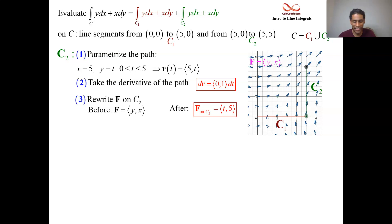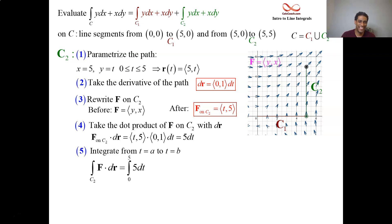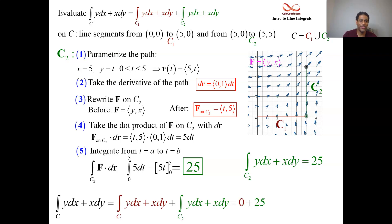And we do the dot product in step 4. 0 times t, 1 times 5, it's 5 dt. So we integrate from t equals a to t equals b, 5 dt. Let's get 25. So the integral over c1 was 0, and integral over c2 is 25. Grand total, 25.